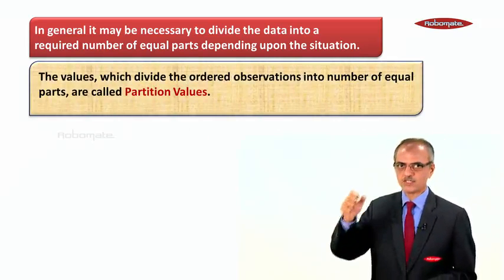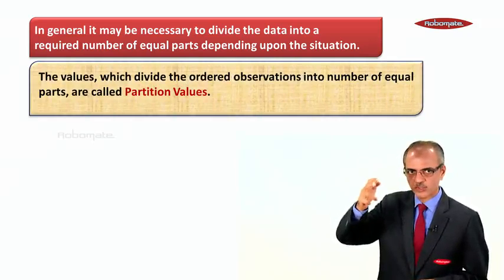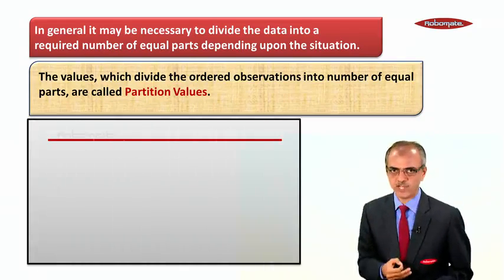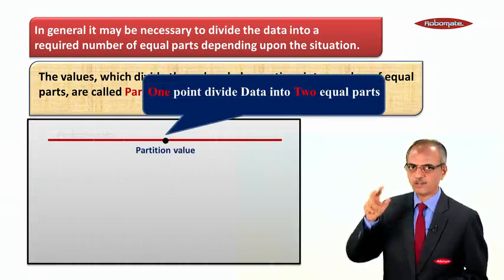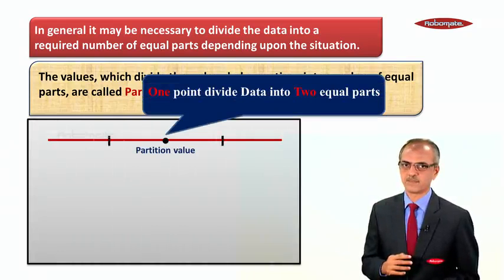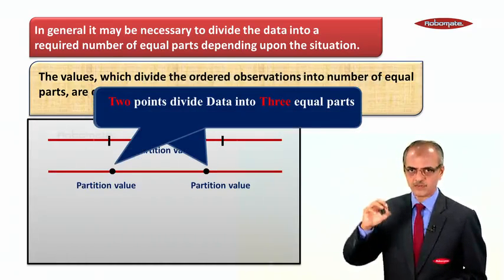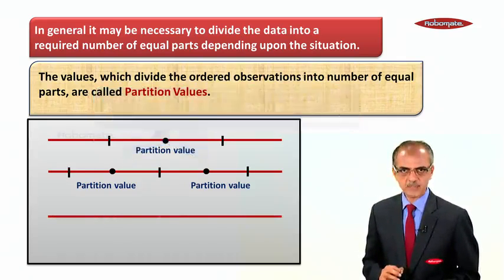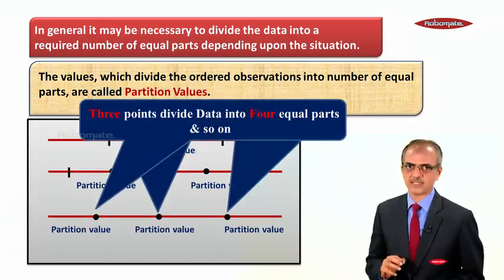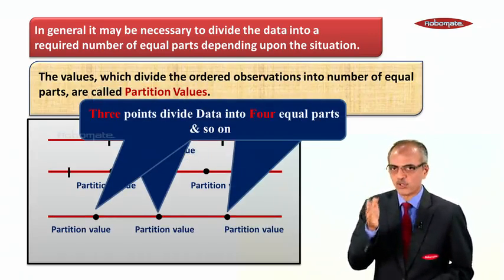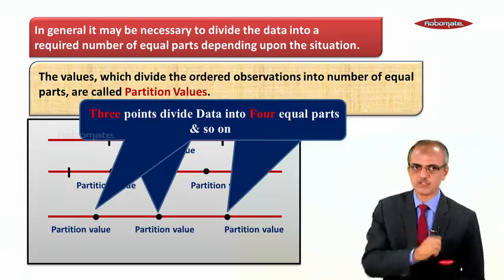The values which divide the ordered observations into a number of equal parts are called partition values. One point divides data into two equal parts and two points divide the data into three equal parts. Three points divide the data into four equal parts. All these points are called partition values.